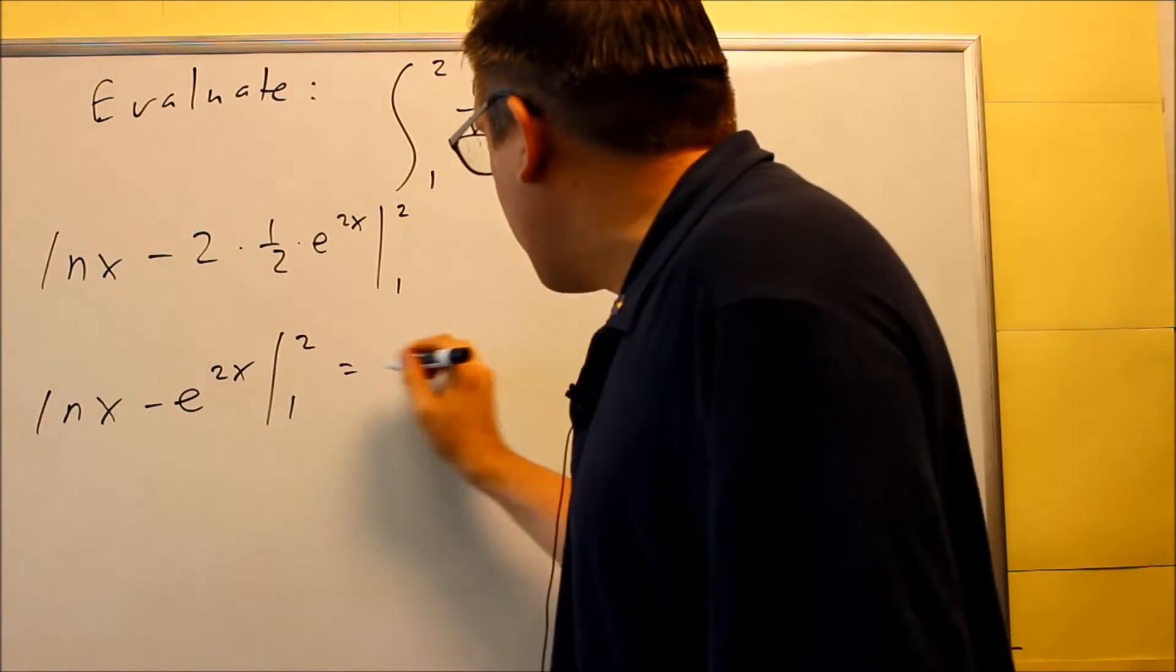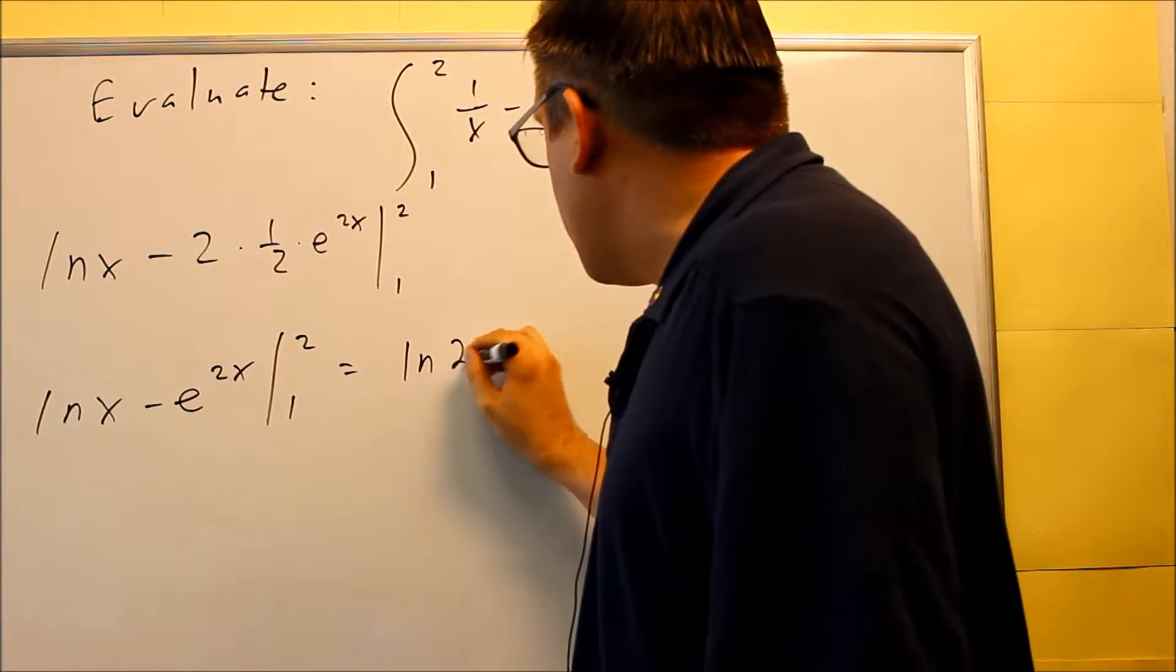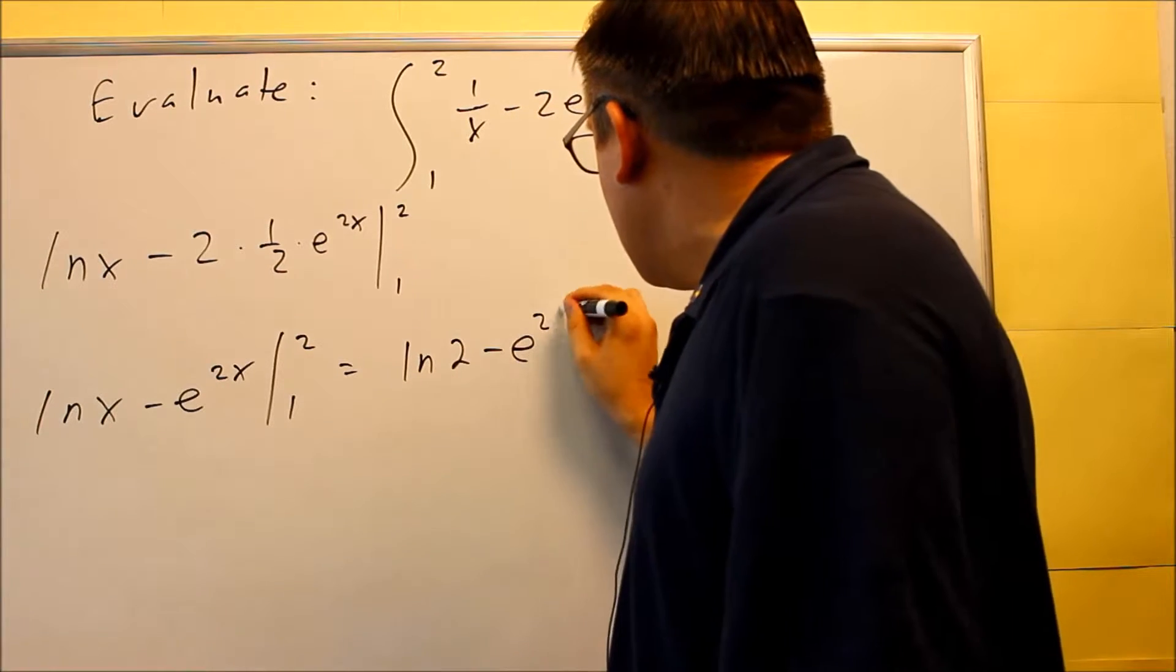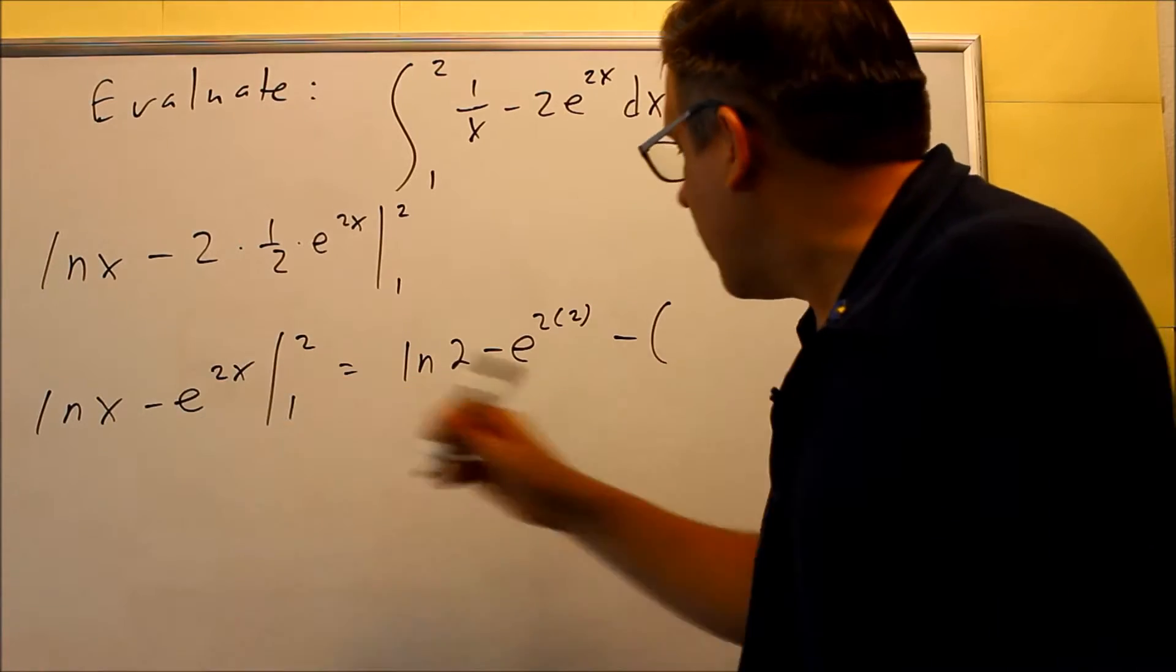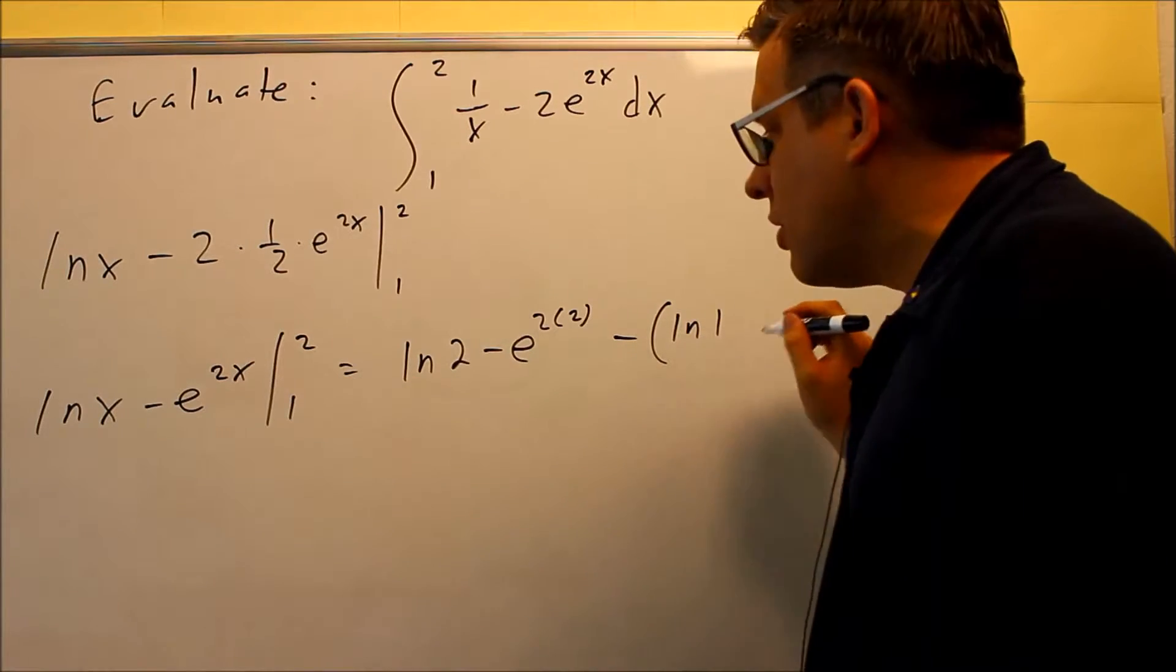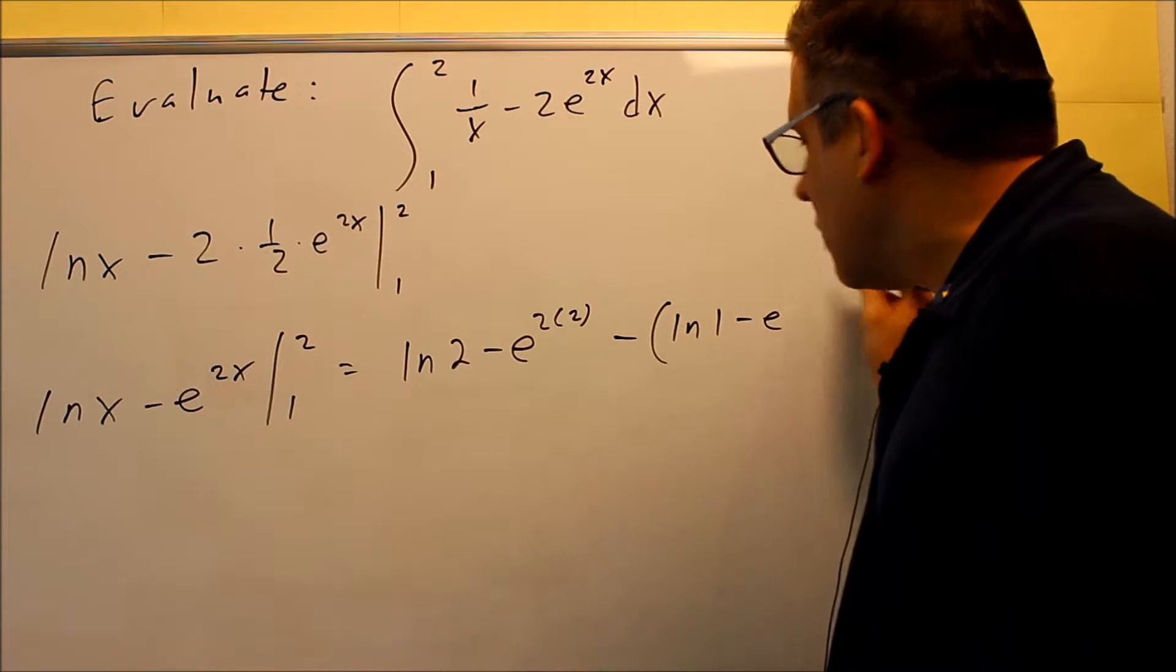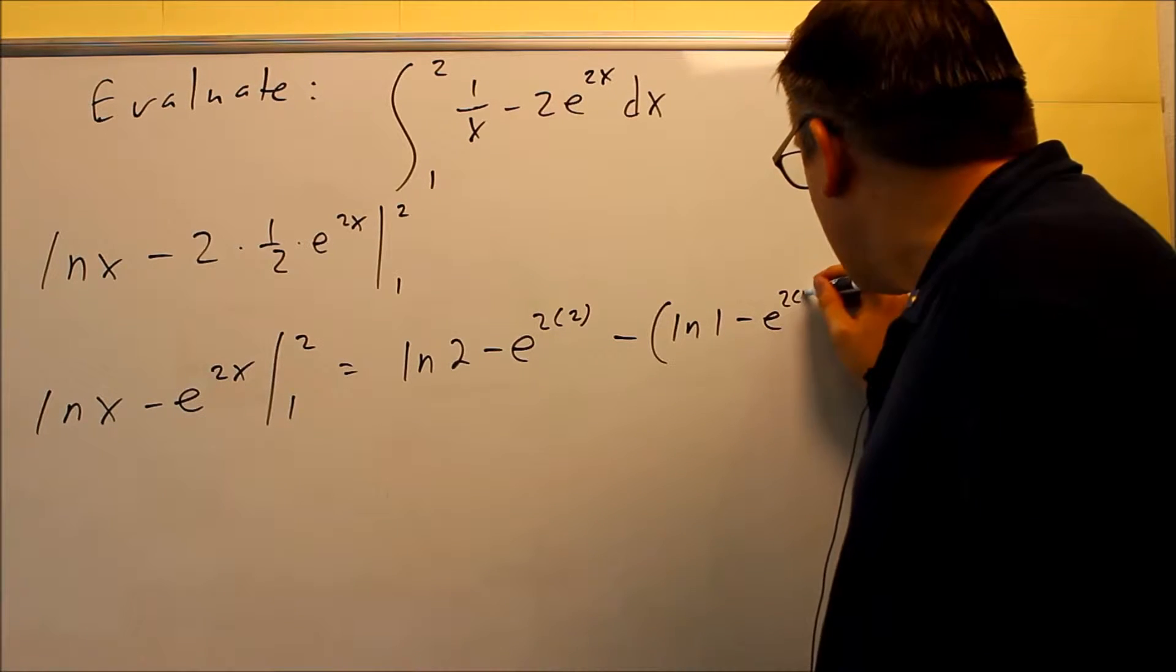We're going 1 to 2. So we'll put in a 2 first. Natural log of 2 minus e to the 2 times 2. And I have minus with a 1 put in there. Natural log of 1 minus e to the 2 times 1.